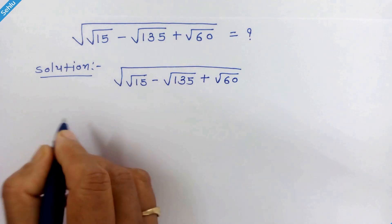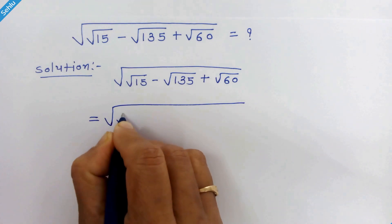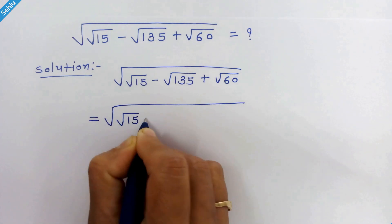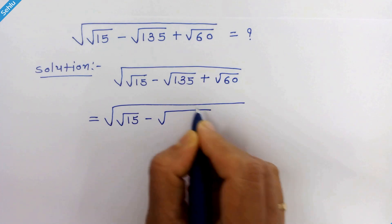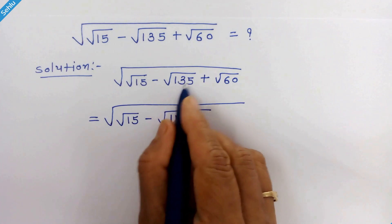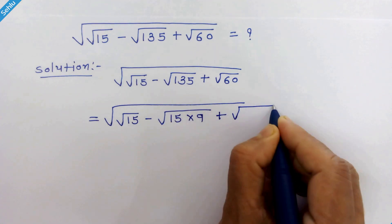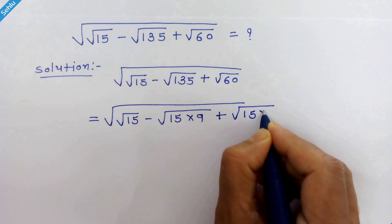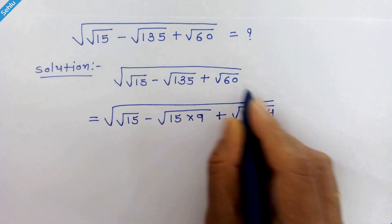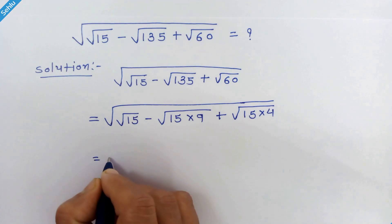So we can write it like square root of square root 15 minus square root of 15 times 9 in place of square root 135, plus 15 times 4 in place of square root 60.